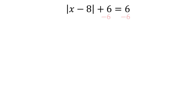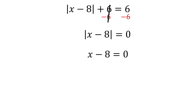We can do this by subtracting 6 from both sides. This leaves us with the absolute value of x minus 8 is equal to 0. There is only one way that x minus 8 can have a distance from 0 of 0, and that's if x minus 8 is equal to 0.